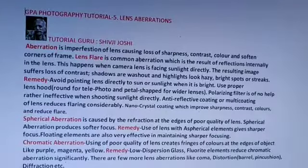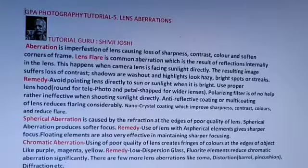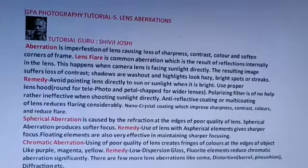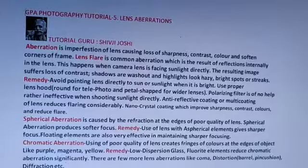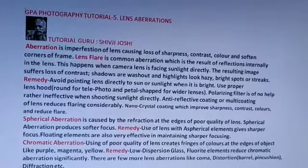Chromatic aberration: using a poor quality lens creates fringes of colors at the edges of objects, like purple, magenta, and yellow. The remedy is low dispersion glass.